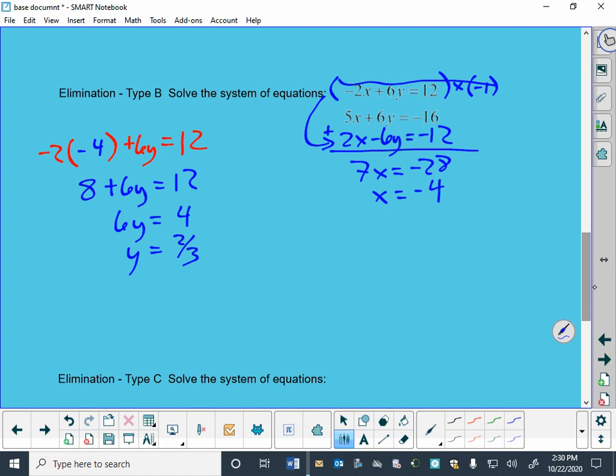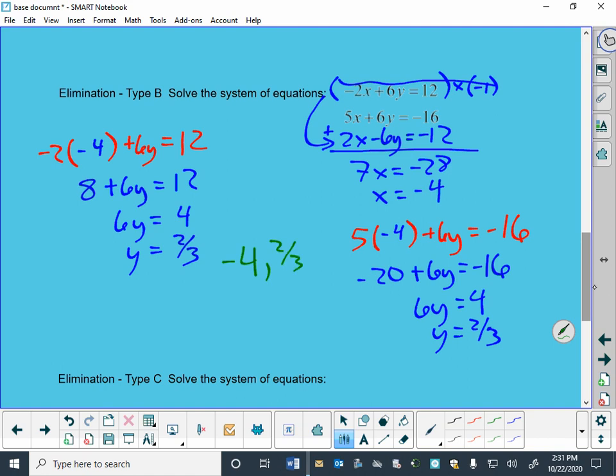And because of what happened on the last problem, I'm going to check it with the other one as well. So, 5 times the x plus 6y is negative 16. And my x is negative 4. So, negative 20 plus 6y is negative 16. And 6y is equal to 4. And y is equal to two thirds. So, I feel very good about my answer now of an x at negative 4 and y at two thirds.